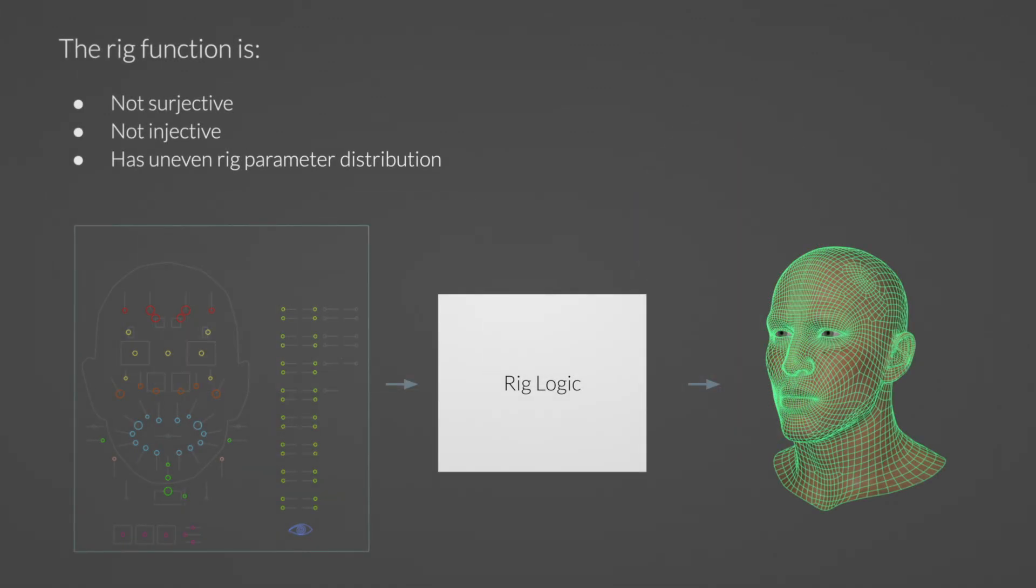It's important to analyze what makes this problem non-trivial. First, the rig function is assumed to be non-surjective. This means the rig cannot produce every possible mesh in the topology. In addition, the rig may not be injective. This means that different sets of rig parameters can produce the same mesh. Altogether, this means that even rigs that appear very simple at first might not have a perfect inverse.